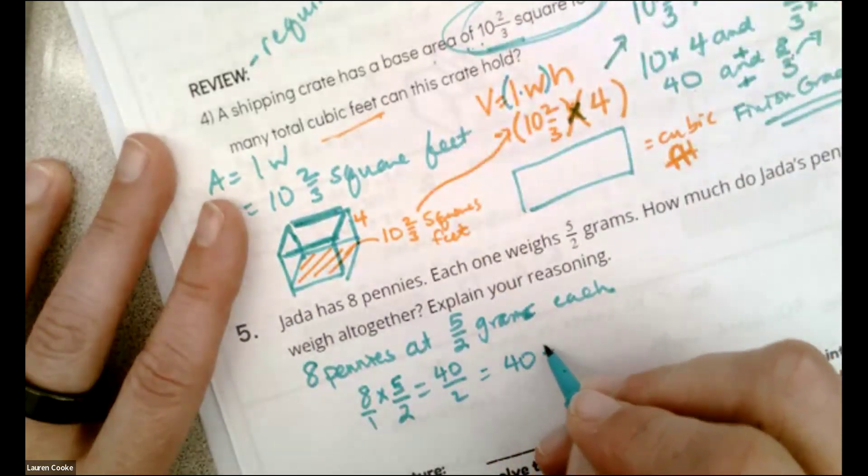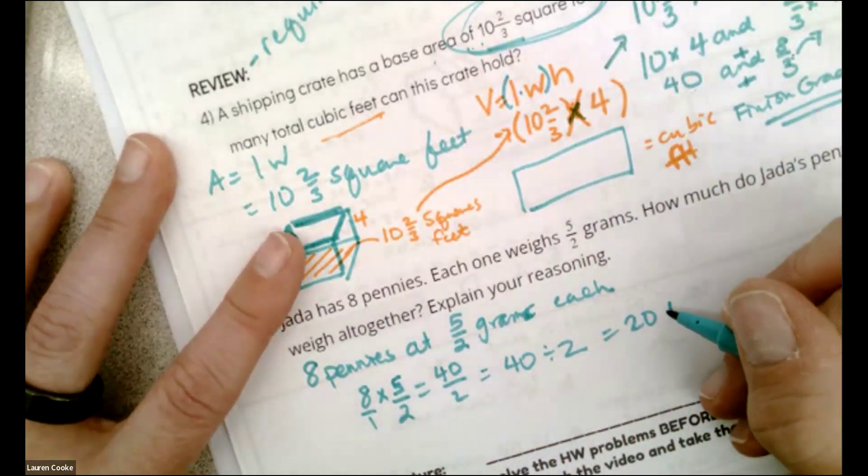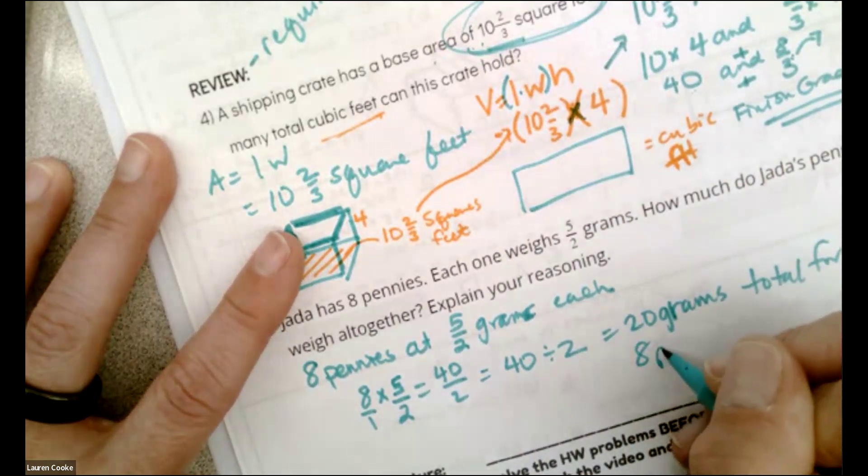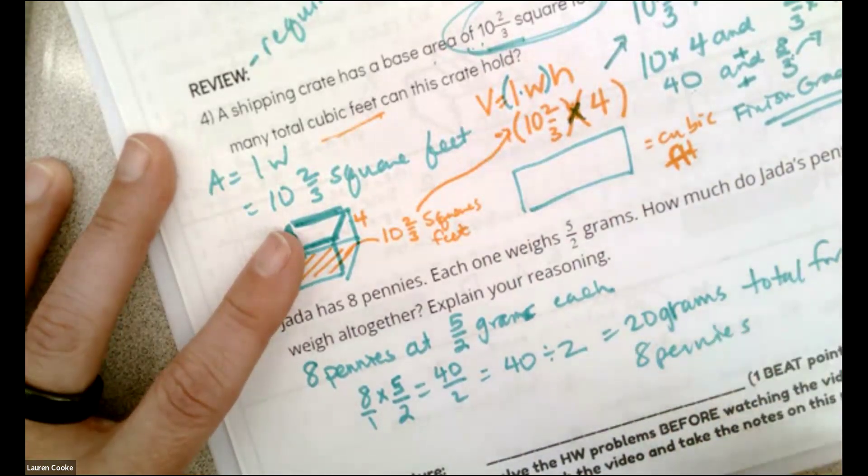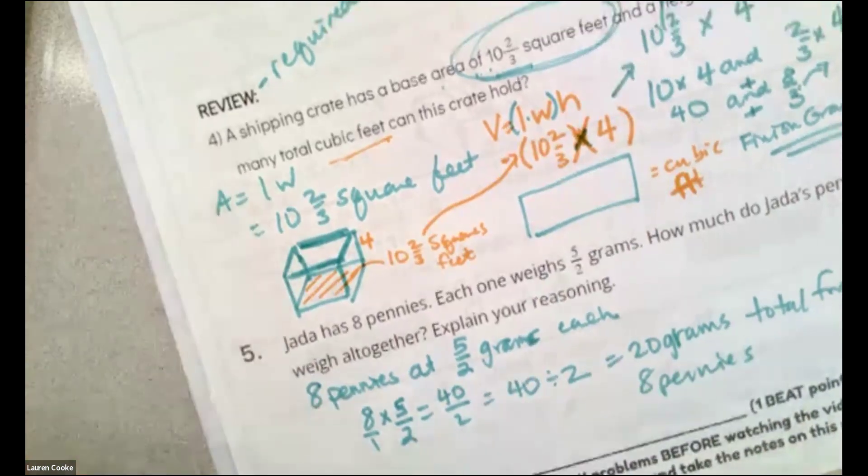And I know I'm multiplying across, which is actually what I'm doing in my regular like lessons even though this is review. And then this is 40 divided by two, which I know is 20 grams total for eight pennies.